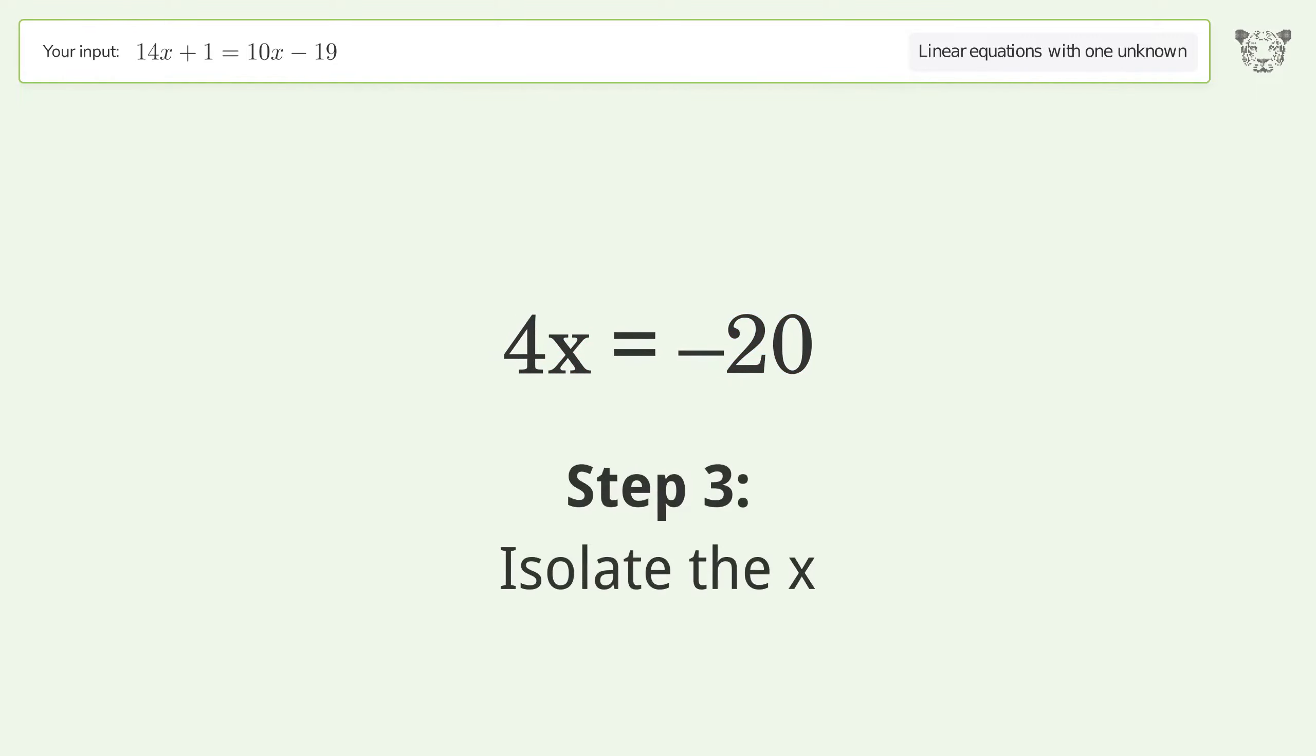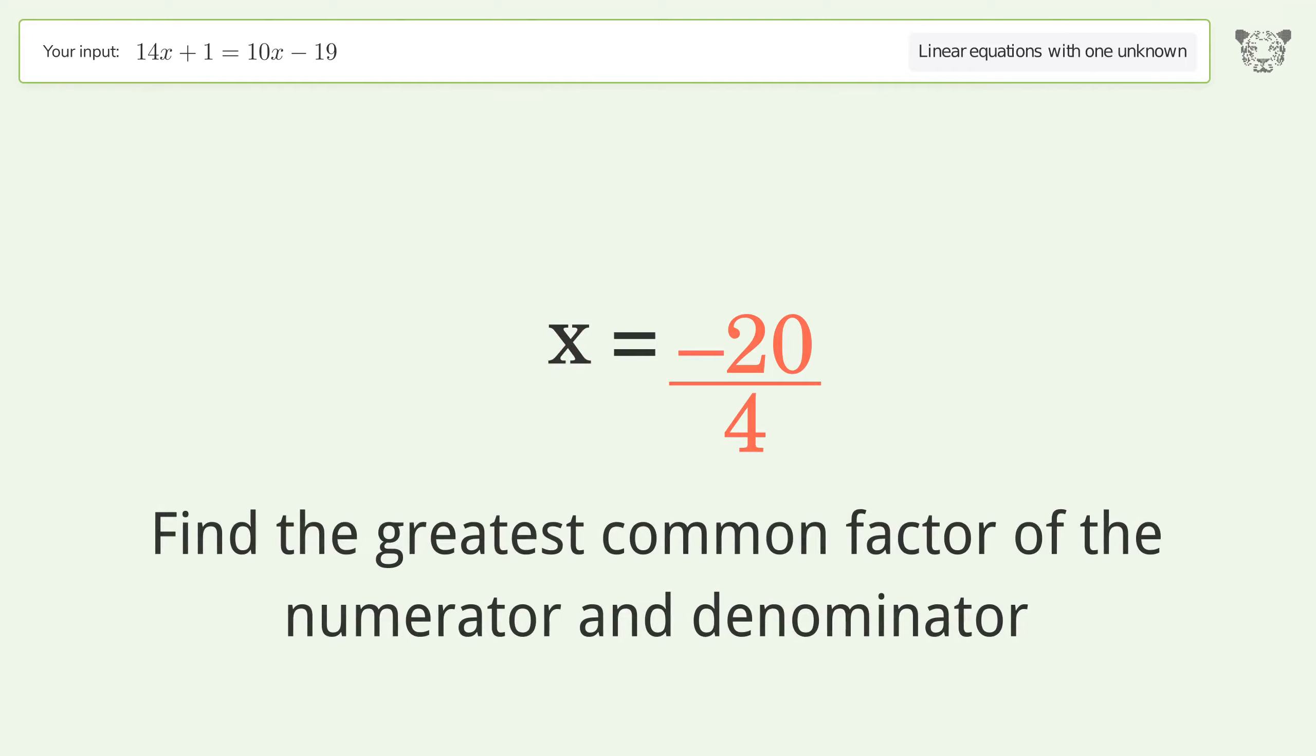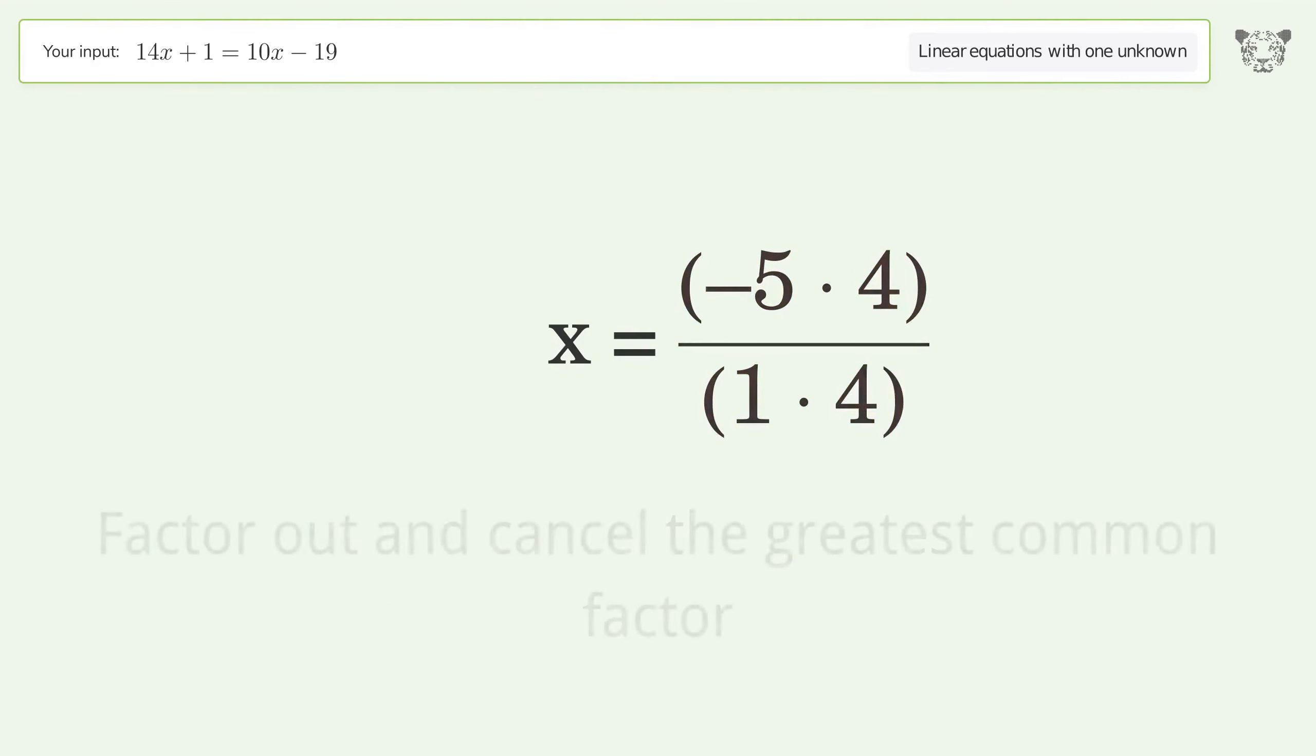Isolate the x. Divide both sides by 4. Simplify the fraction. Find the greatest common factor of the numerator and denominator. Factor out and cancel the greatest common factor.